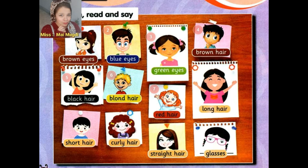Number eight: Long hair. What is the meaning of long hair? Long hair — يعني شعر طويل. Repeat after me: long hair. Again, long hair. Excellent! What is the meaning of long hair? شعر طويل. Excellent! Okay, number nine: Short hair. What is the meaning of short?